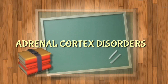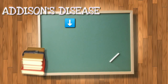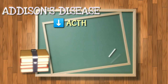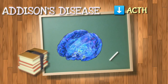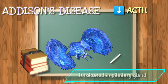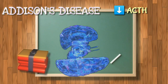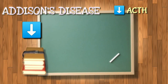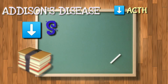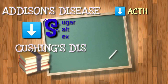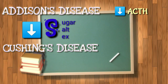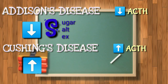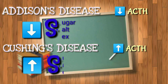Now let's proceed to the disorders. Addison's disease is characterized by a decrease in the production of ACTH, or adrenocorticotropic hormone. ACTH is released in our pituitary gland to stimulate other hormones such as cortisol. So in this disorder, there is decreased production of ACTH, which also leads to decreased production of the three major hormones — sugar, salt, and sex. While in Cushing's disease, it is characterized by an increase in the production of cortisol, the total opposite of Addison's disease, which leads to increased salt, sugar, and sex.